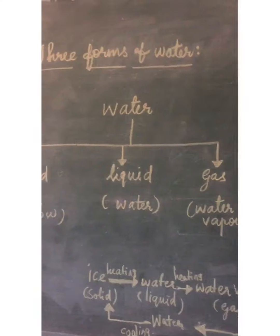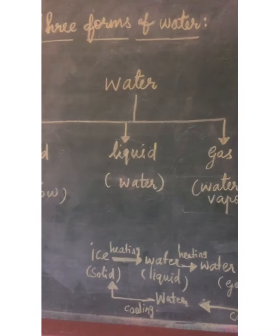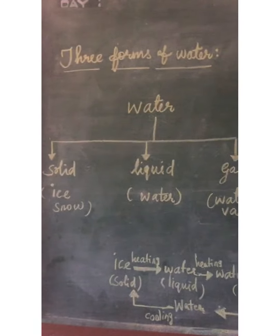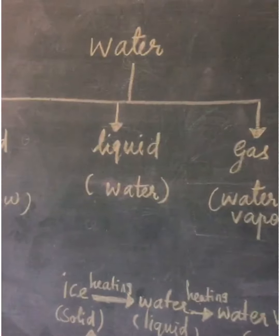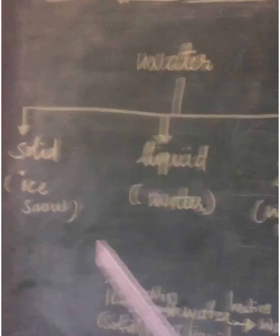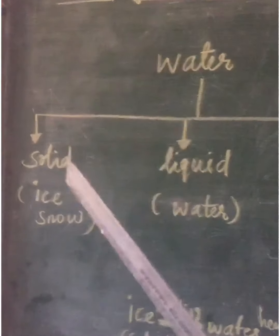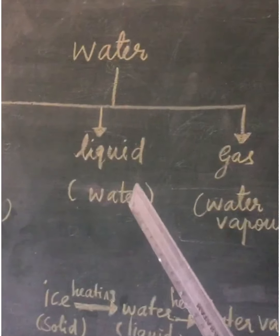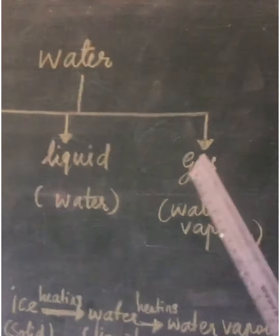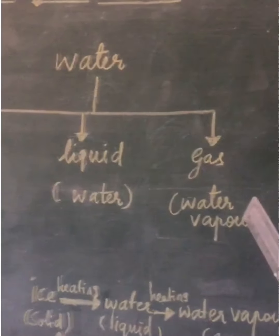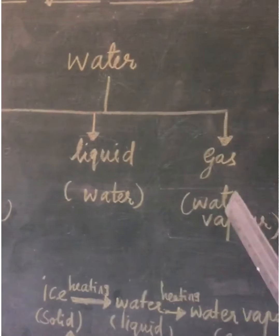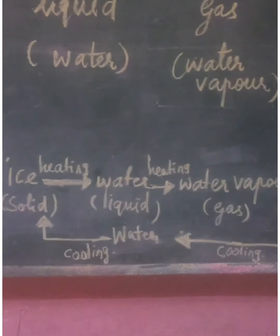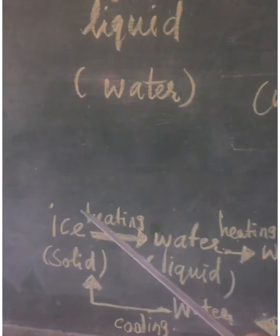Next we are going to study about the 3 forms of water. Naturally, water exists in 3 forms. They are: solid form — for example, ice and snow; liquid form — for example, water; and gaseous form — for example, water vapor. So water exists in solid state, liquid state, and gaseous state.